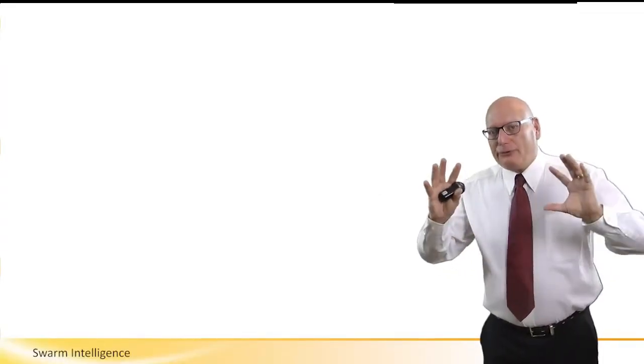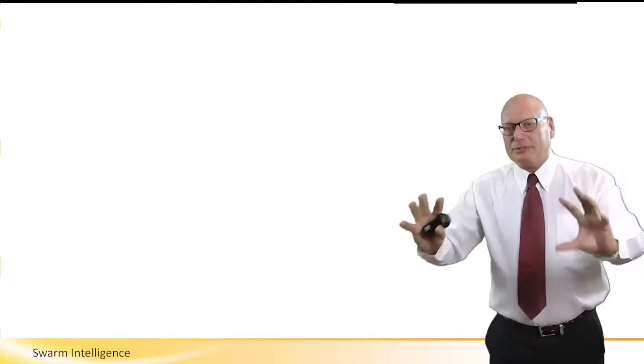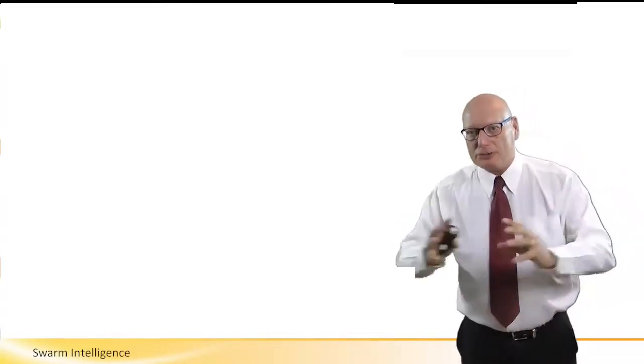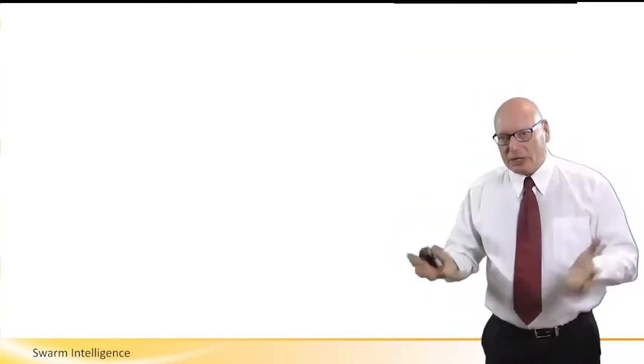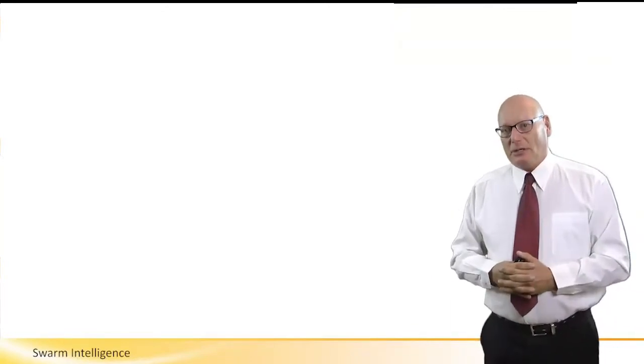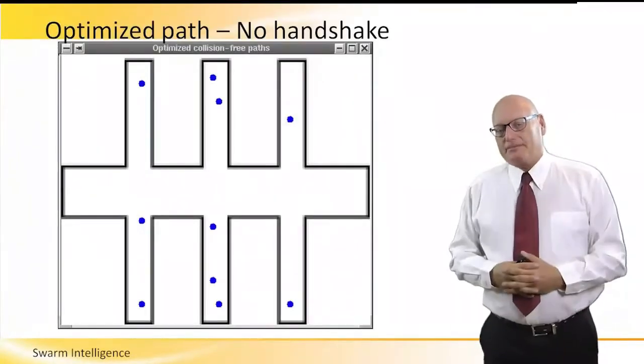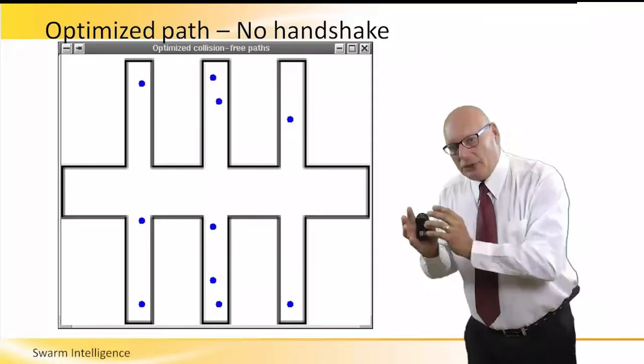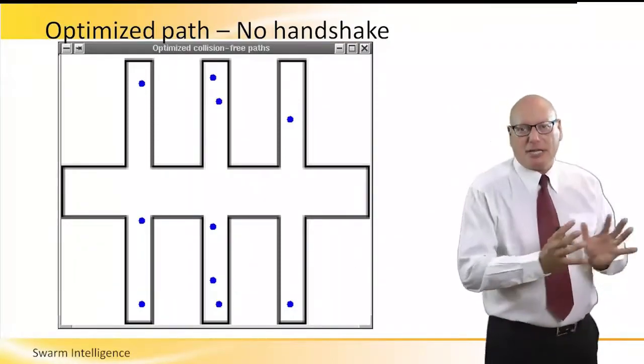We have two families of characteristics or behaviors of robots when they actually share the same workspace and work simultaneously. One family is no handshaking, the other family is handshaking.